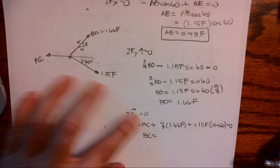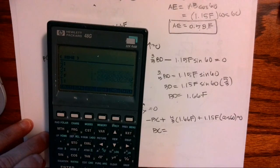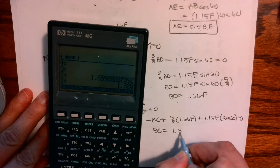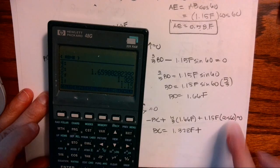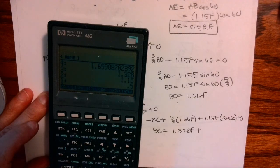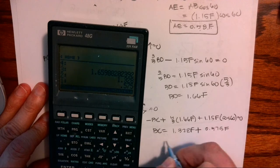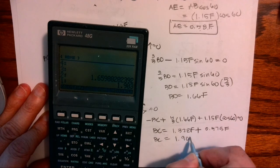And we're going to just start simplifying: 4/5 divided by 1.66 times, so I get 1.328 F plus 1.15 enter 60 cos times 0.575 F. If I add those together, BC equals 1.903 F.